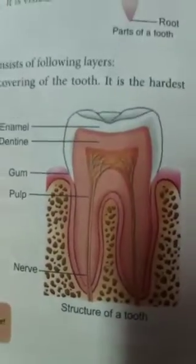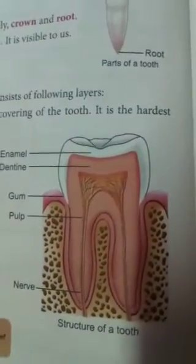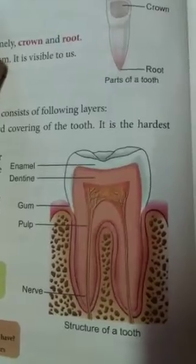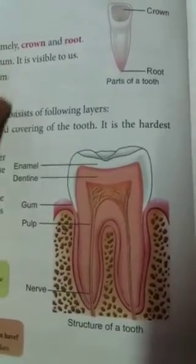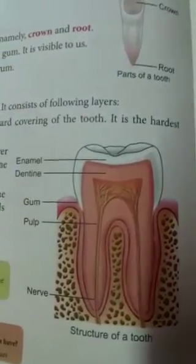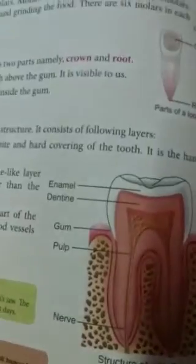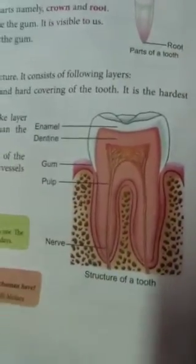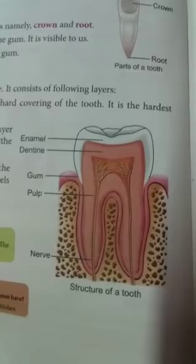Now next we come to premolars. Premolars are located next to the canine. They are generally broad and flat, and they are used for cracking hard food such as nuts. So they are called cracking teeth.